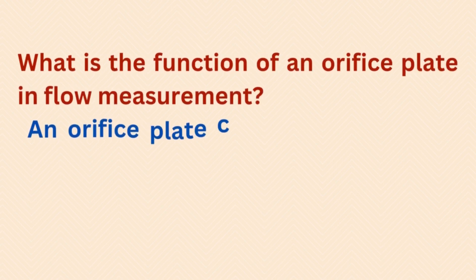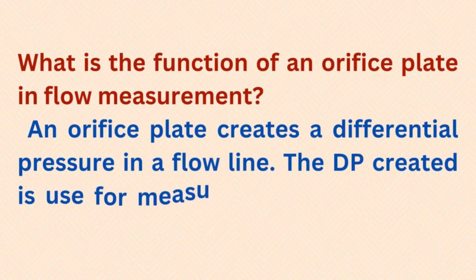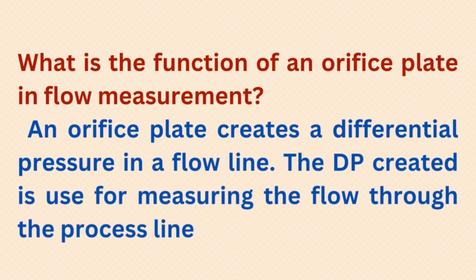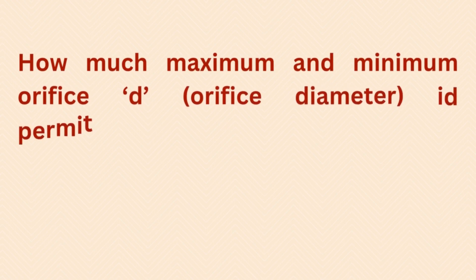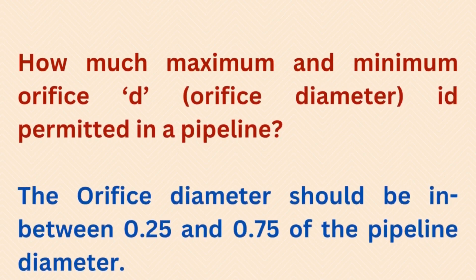What is the function of an orifice plate in flow measurement? An orifice plate creates a differential pressure in a flow line; the DP created is used for measuring the flow through the process line. The orifice diameter should be between 0.25 and 0.75 of the pipeline diameter.